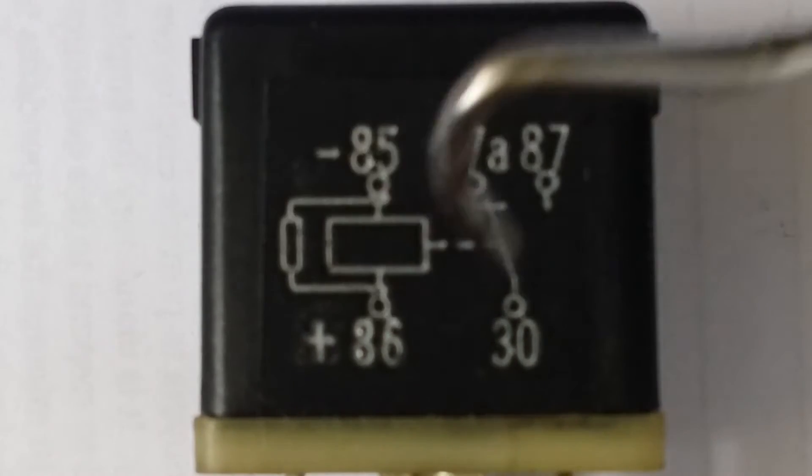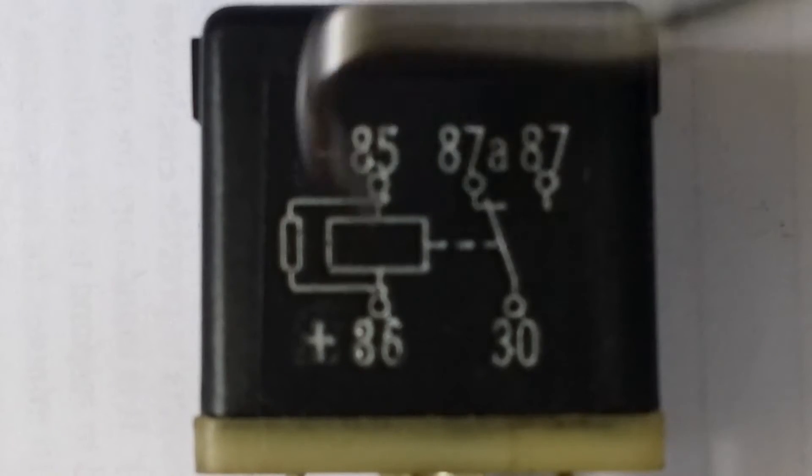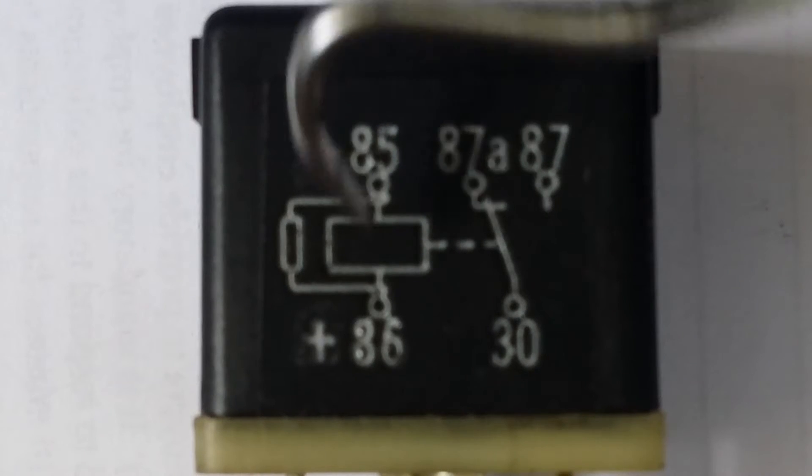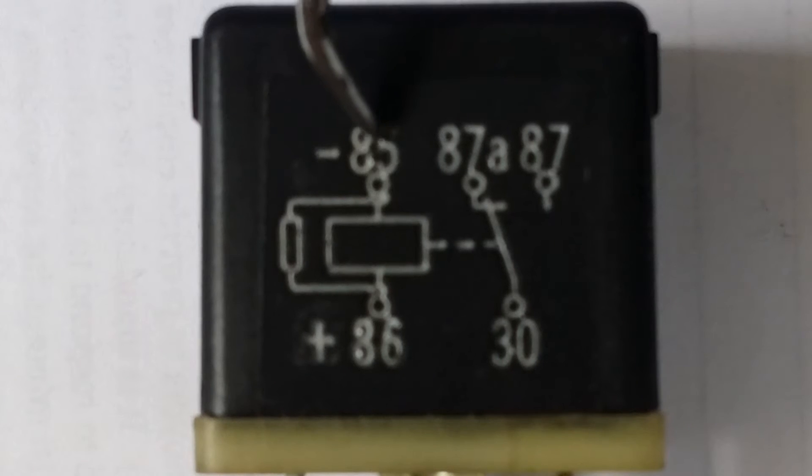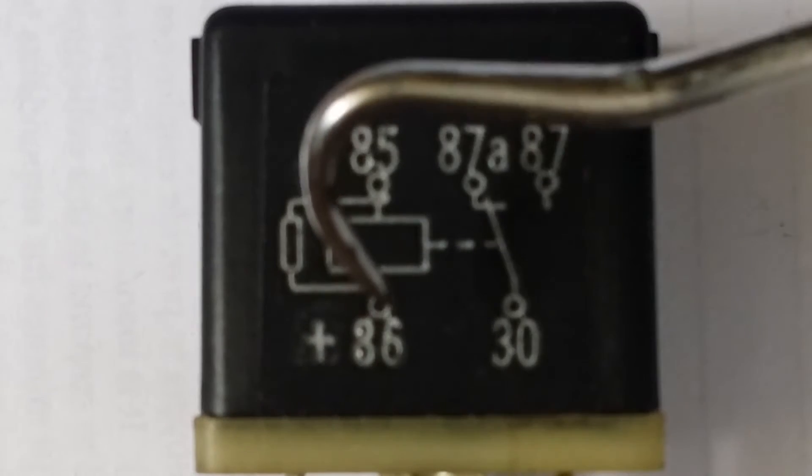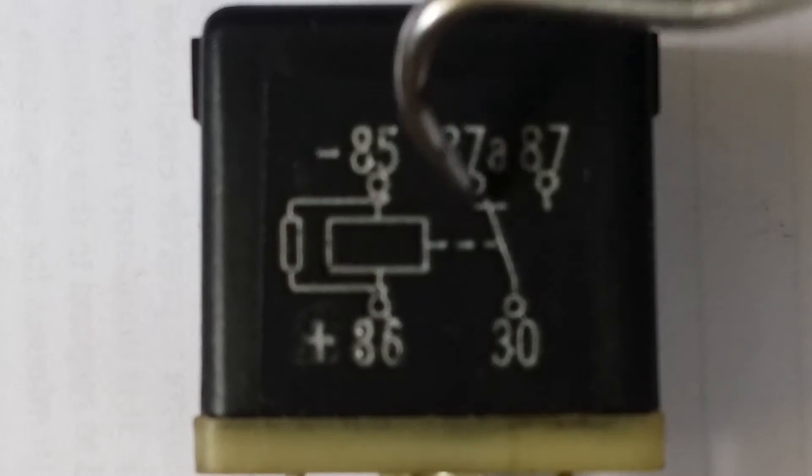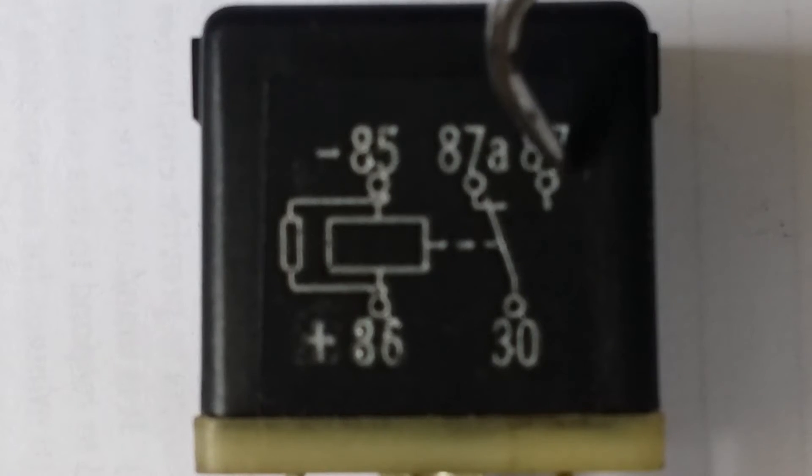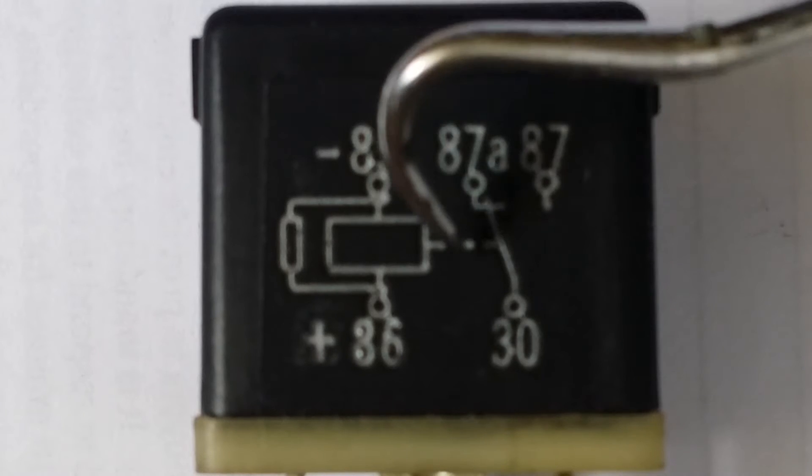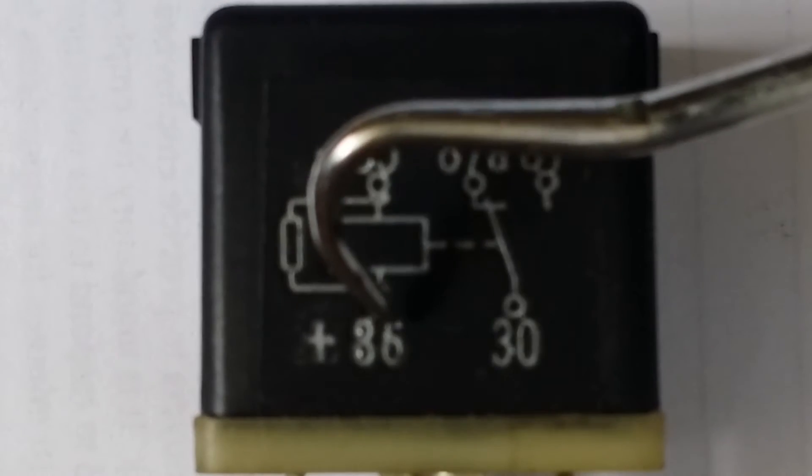That's how this whole thing works. You have a switch - say if you had a switch inside the Jeep - you had 85 grounded, you put voltage to 86. It's going to push this lever over to here and put 30 to 87. And when you let go of it, when you switch it off or take voltage from 86, it's going to back over. That'll be the clicking sound you hear.